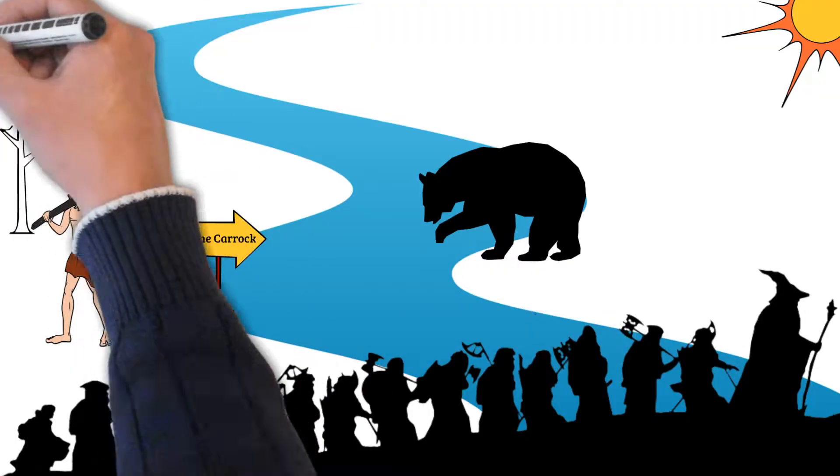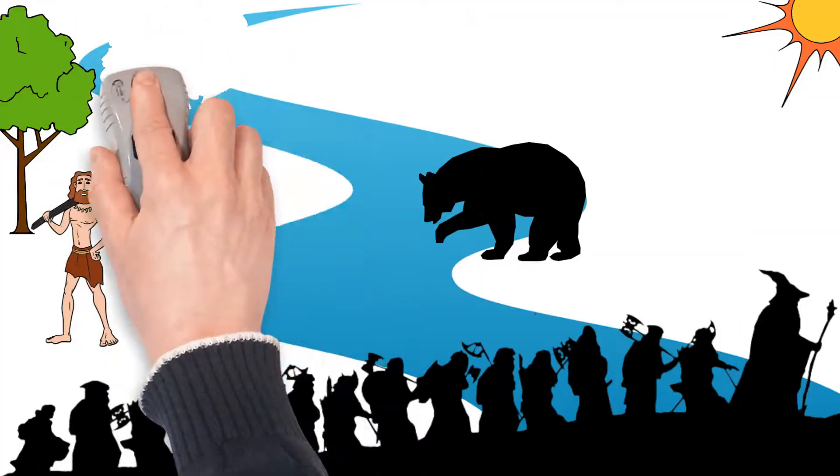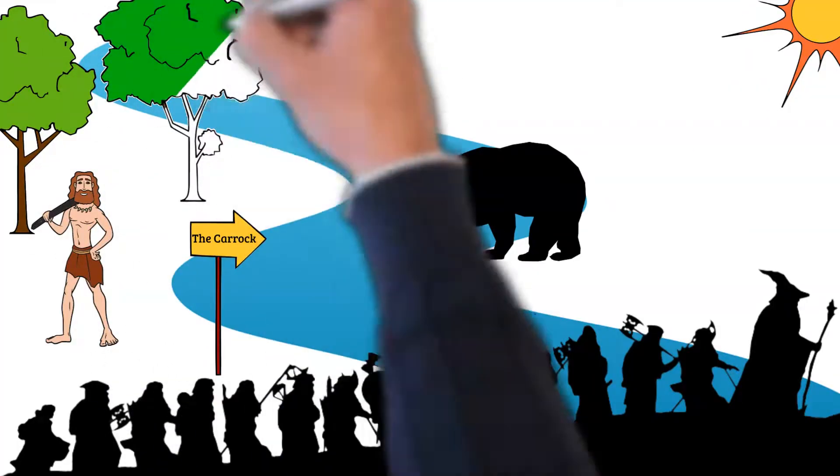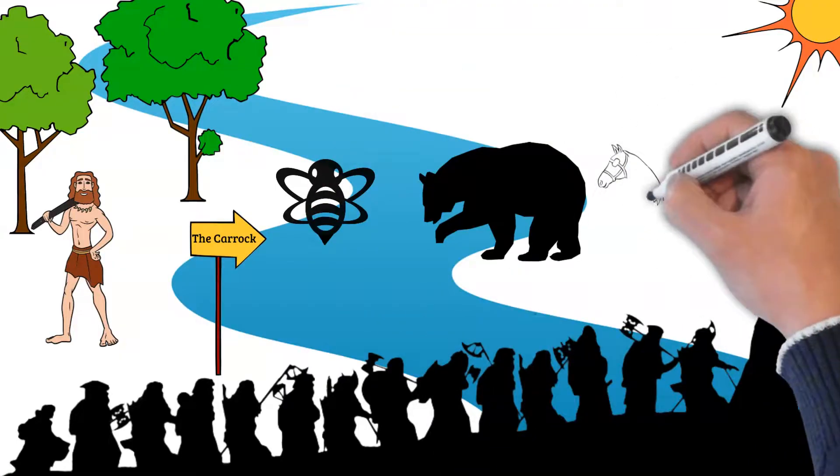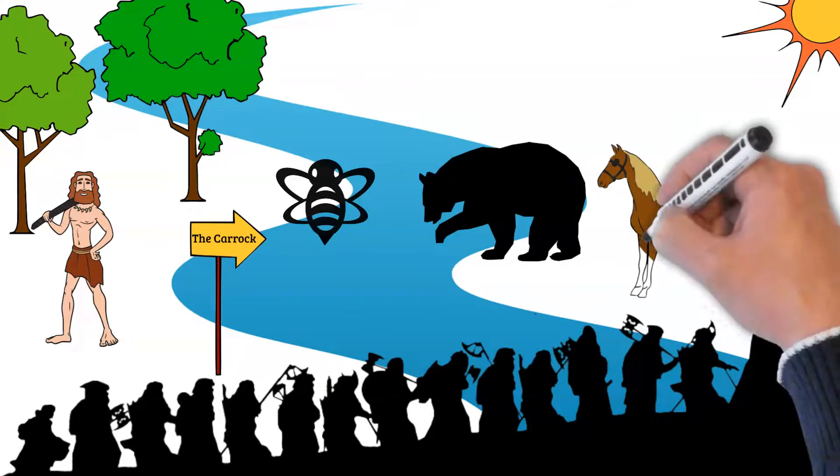Beorn lived in an oak wood with his cattle, horses, and bees. Gandalf warned that the group be polite and steer clear of any mention of furriers, rugs, or capes, as it would undoubtedly offend Beorn.